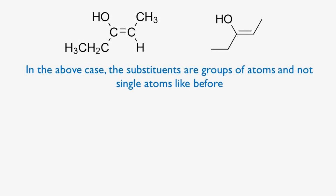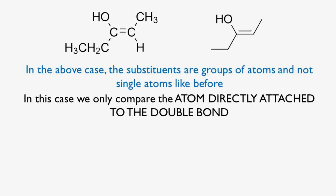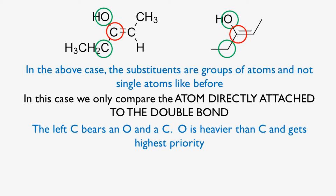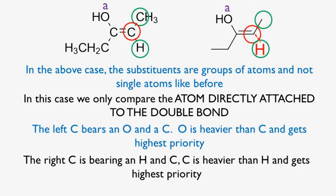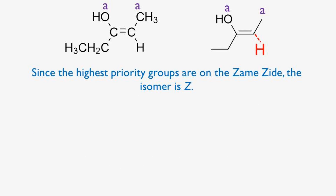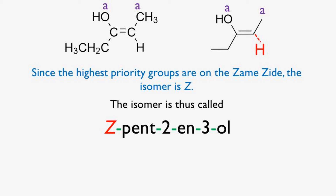Rule nine. In this case, the substituents are groups of atoms rather than single atoms. We only compare the atom directly attached to the double bond to determine if the isomer is E or Z. Looking at the left carbon of the double bond, it has an oxygen and a carbon attached — oxygen is heavier than carbon and gets highest priority, marked A. On the right side, we have a carbon and a hydrogen — carbon is heavier than H and gets highest priority, marked A. Since the highest priority groups are on the same side, the isomer is Z, and I would call it Z-pent-2-en-3-ol.